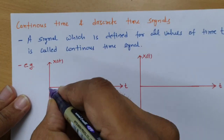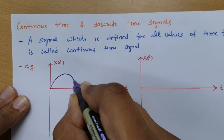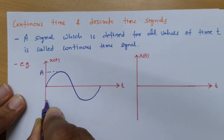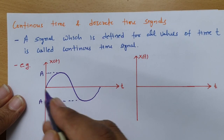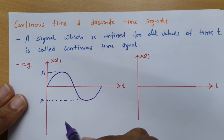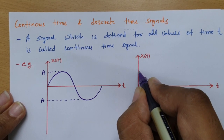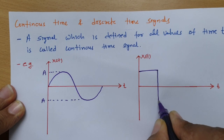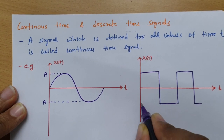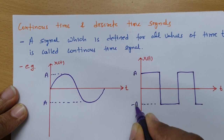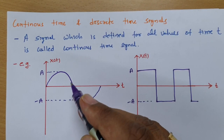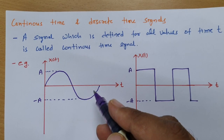There are some basic examples, like the sine wave which we already know. If I have a sine wave with magnitude varying between plus A and minus A, one can observe that at all time instants there is a value, so this signal is a continuous time signal. Similarly, a square wave with magnitude varying between A and minus A is also a continuous time signal, where one can observe values of amplitude at all time intervals.